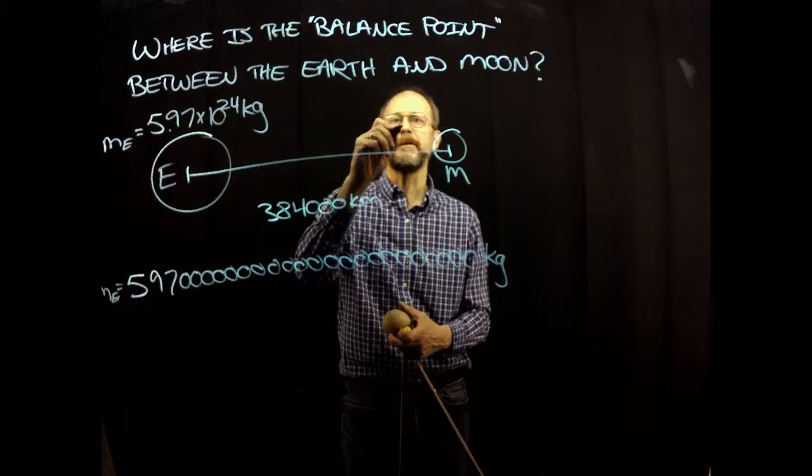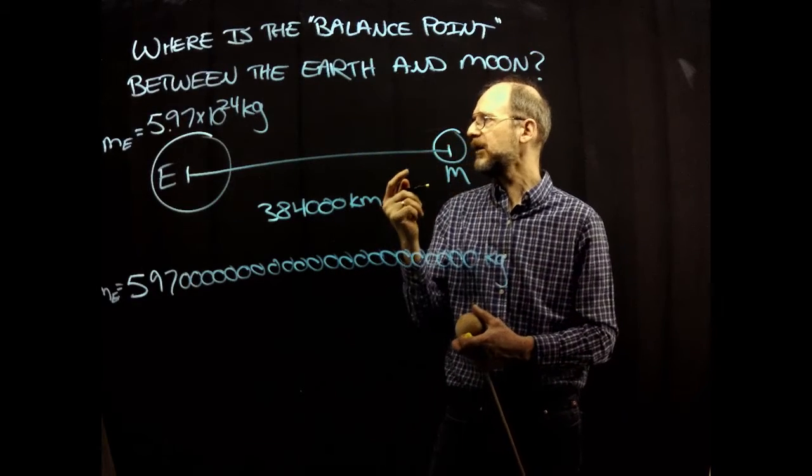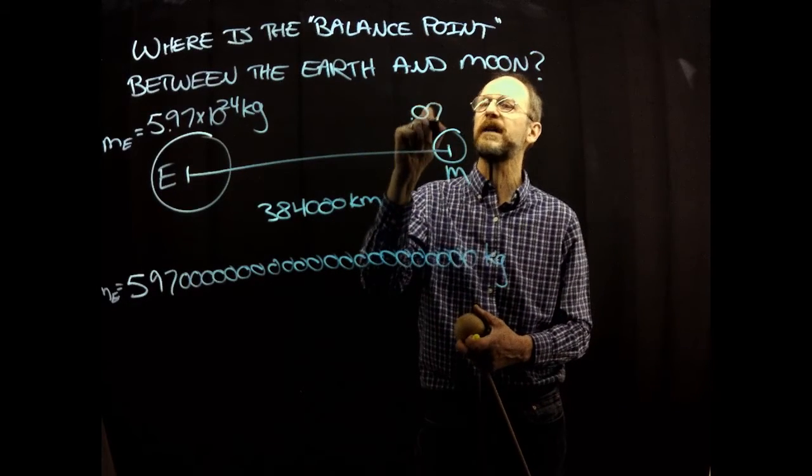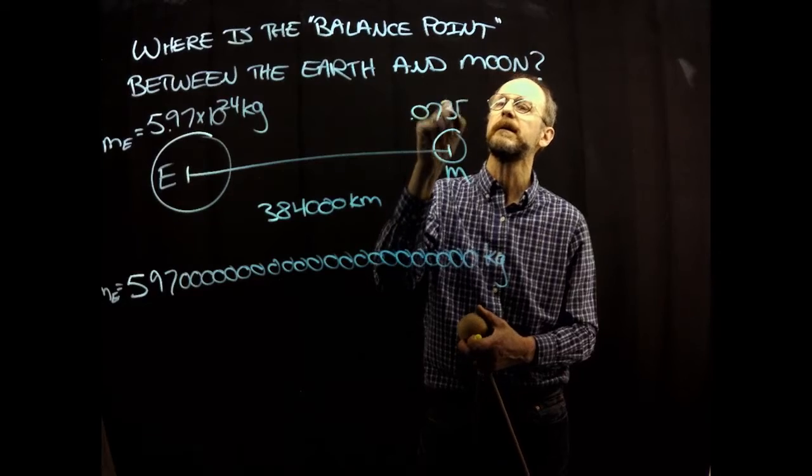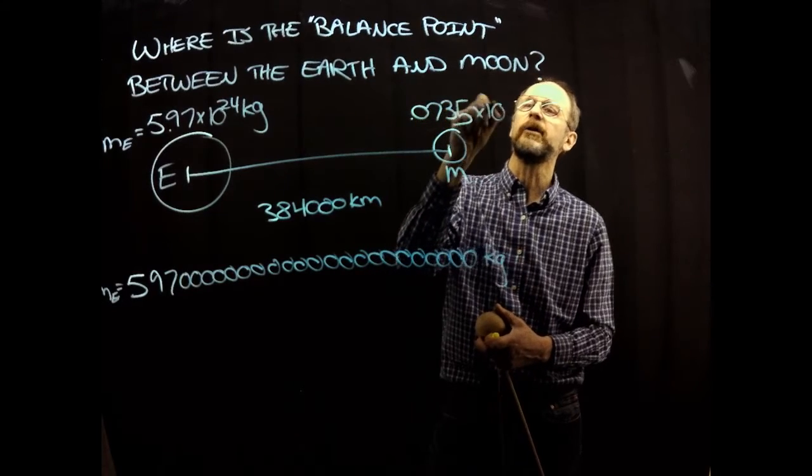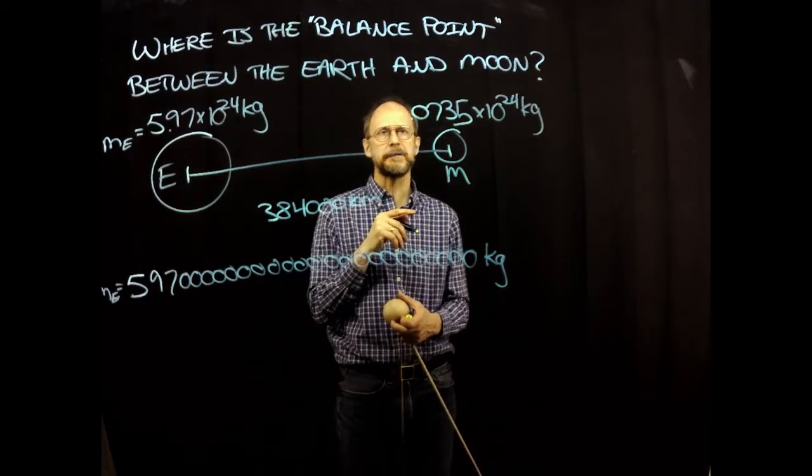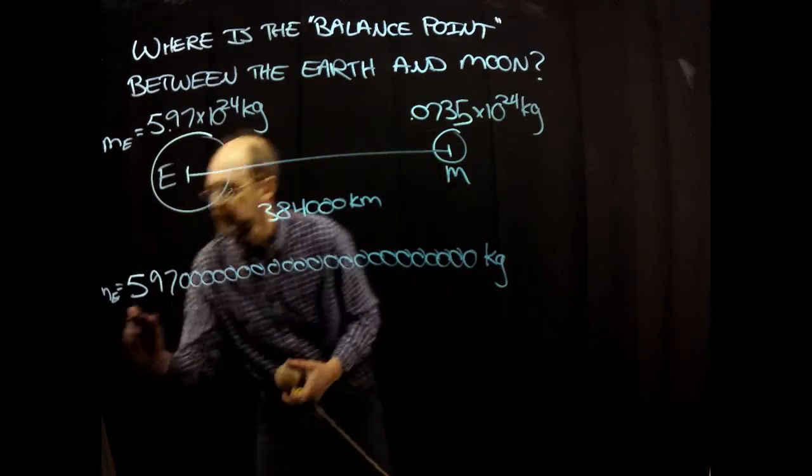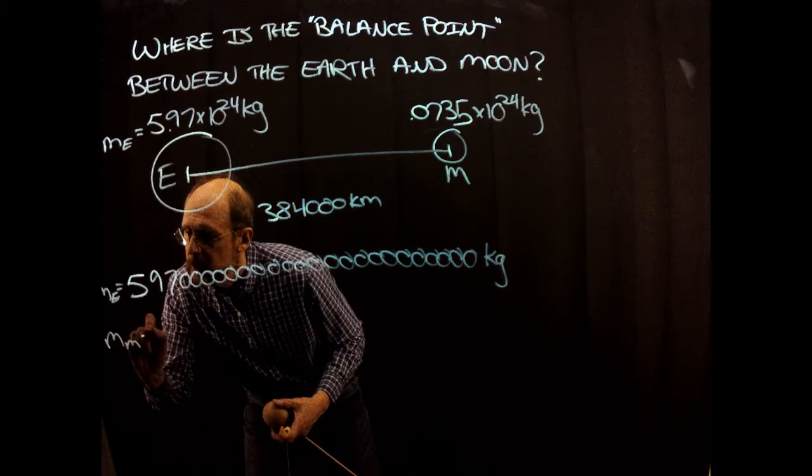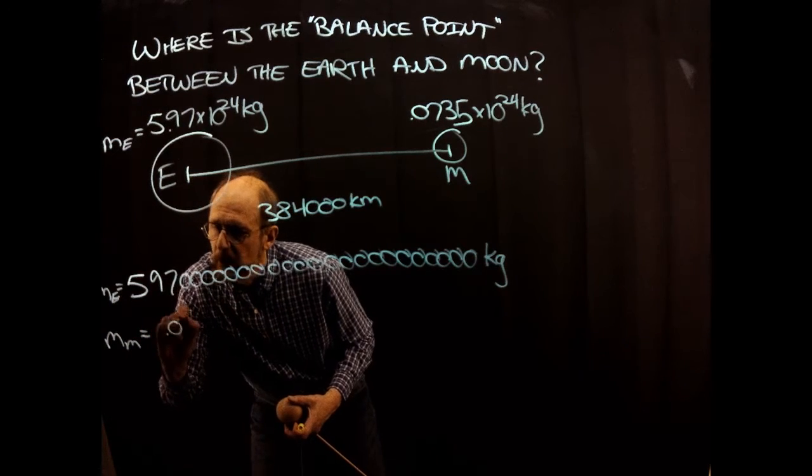And the mass of the moon is quite a bit smaller. It's 0.0735 times 10 to the 24 kilograms. And you'll look at that 0.0735. That looks pretty small, right? But the mass of the moon, 0.0735.